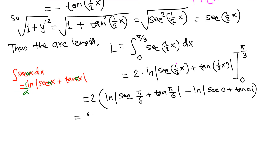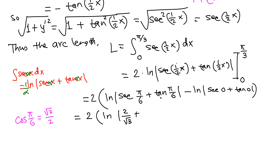Now evaluating: sec(π/6) is the reciprocal of cos(π/6). Cosine of π/6 (30°) is √3/2, so sec(π/6) = 2/√3. And tan(π/6) = sin/cos = 1/√3, which is the same as √3/3.